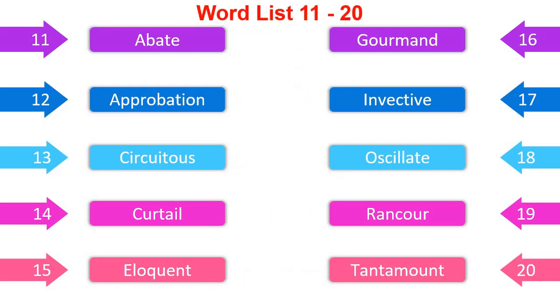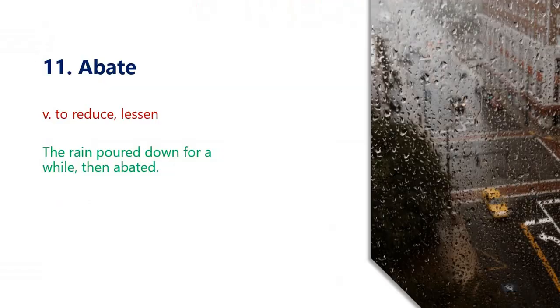These words are: abate, approbation, circuitous, curtail, eloquent, gourmet, invective, oscillate, rancor, and tantamount.